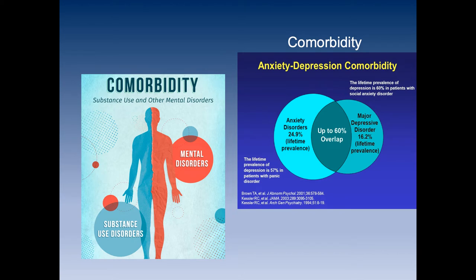Comorbidity is the idea that two or more illnesses are happening at the same time. A very common example is substance abuse and mental disorders. Depression could present alongside alcoholism — was the person depressed when they became an alcoholic, or did alcohol, a central nervous system depressant, exacerbate the depression? Another common pairing is anxiety and depression. The lifetime prevalence of anxiety disorders is 24% — nearly one in four people could have experienced an anxiety disorder. Panic attacks are part of that, and untreated anxiety disorders can lead to major depression.